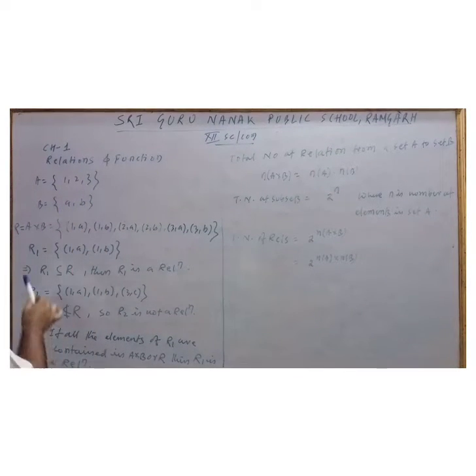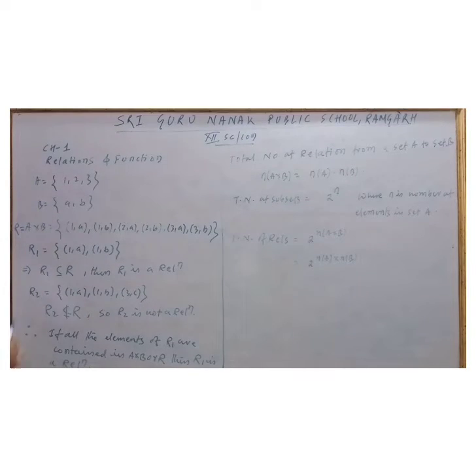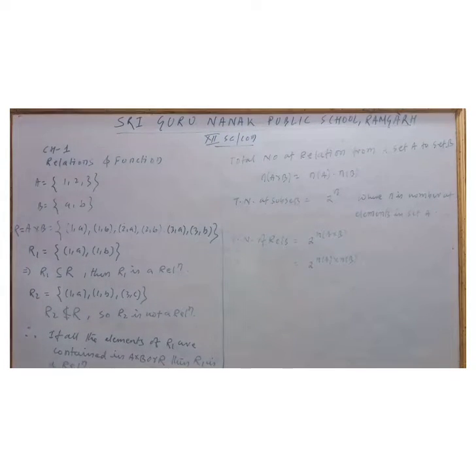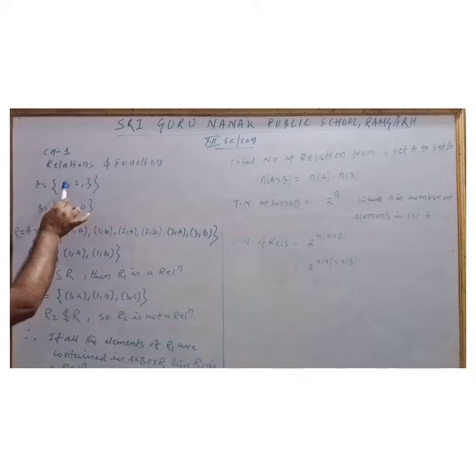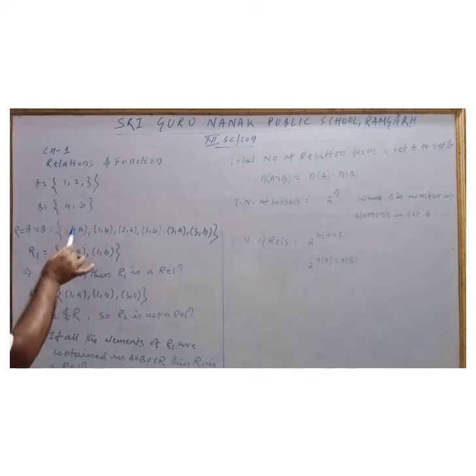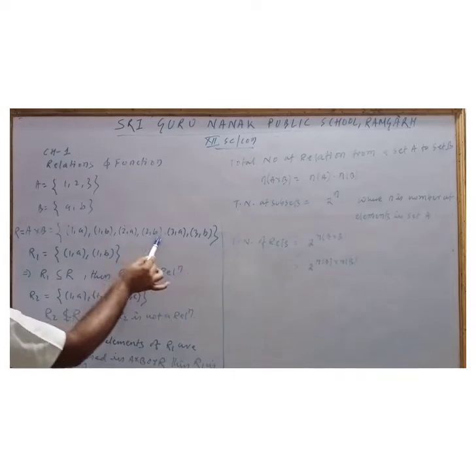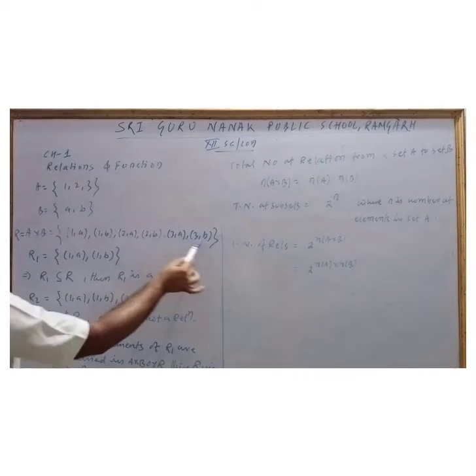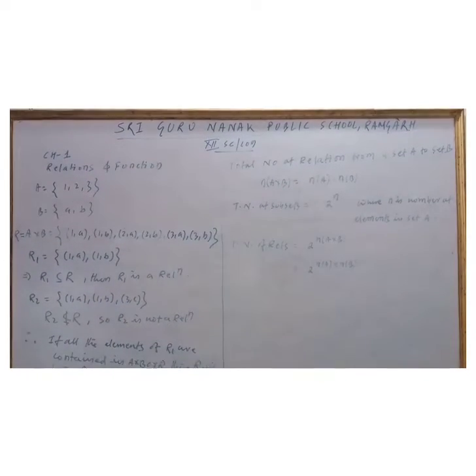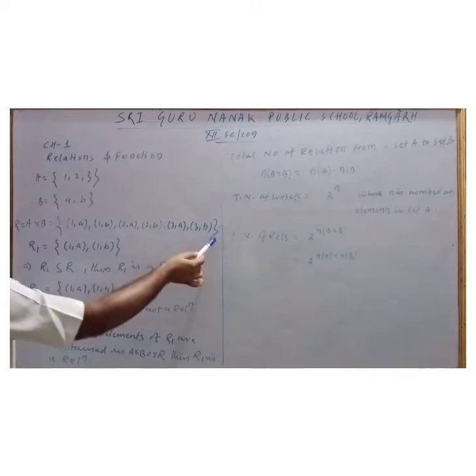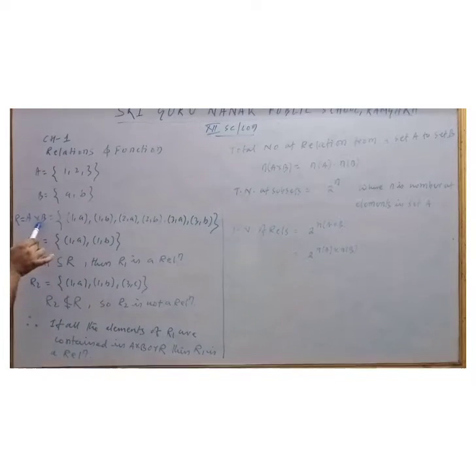Now we will find the Cartesian product. It is like (1,a), (1,b) - these are the ordered pairs. (2,a), (2,b), (3,a), (3,b). So these are the ordered pairs and we call this as A Cartesian product, this is A cross B. We name this as R.